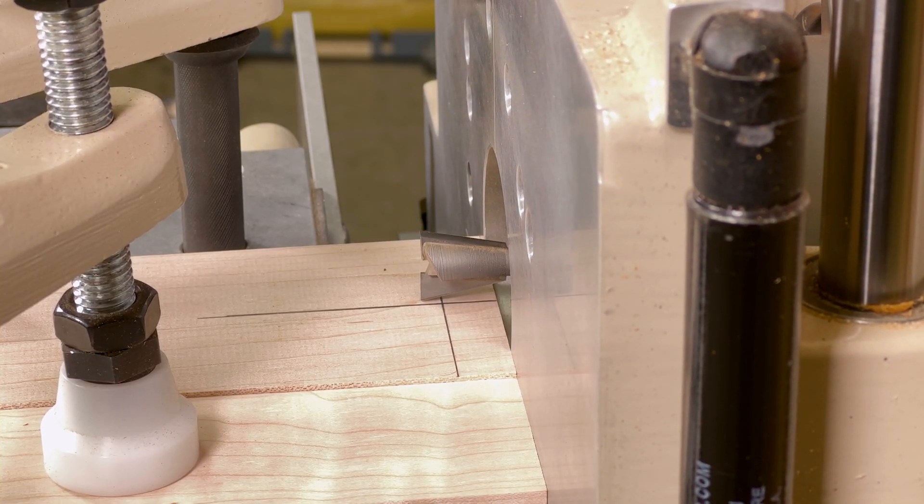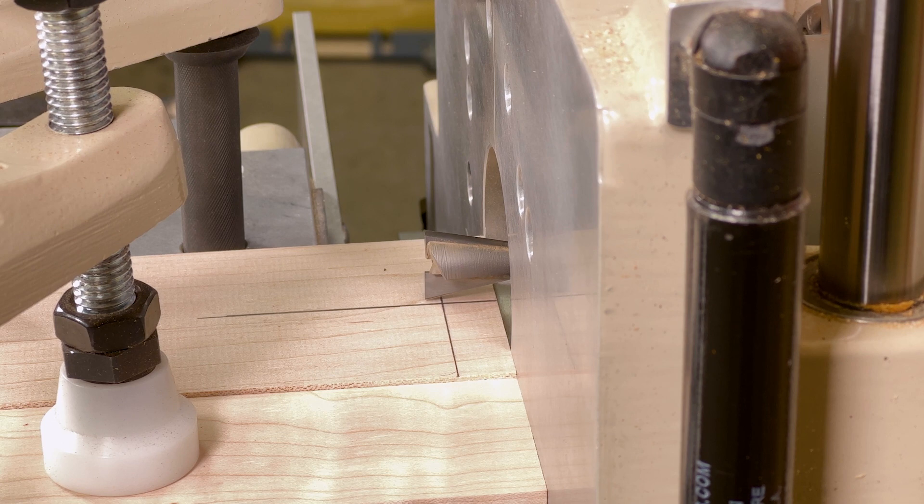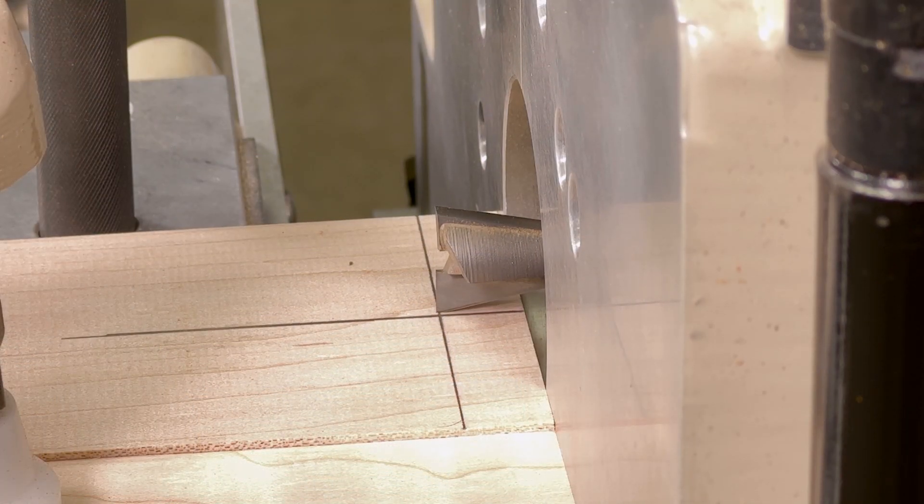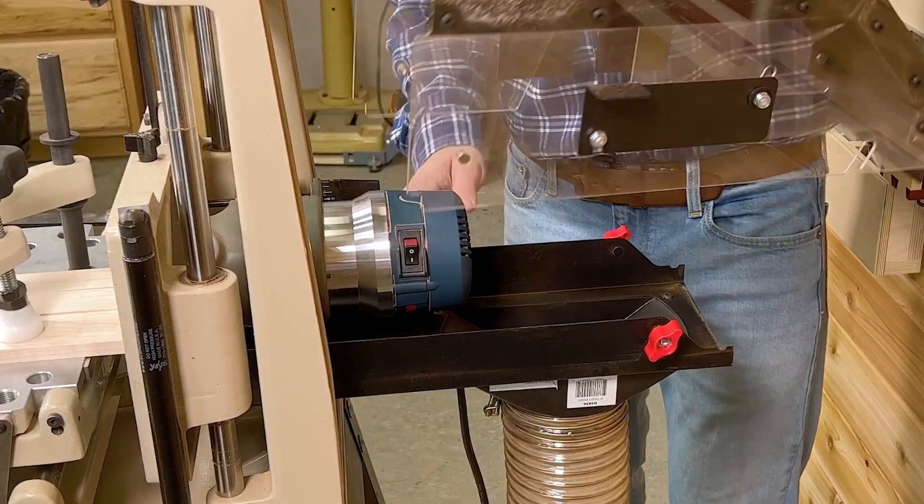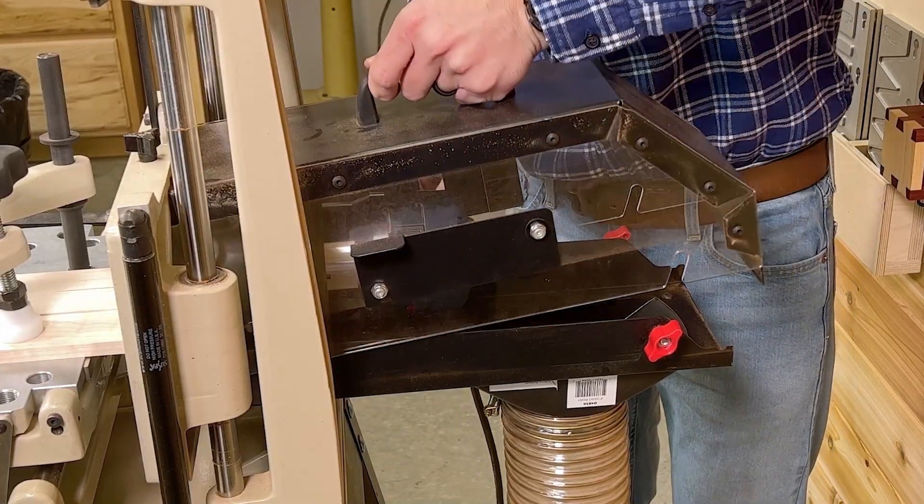Lastly, adjust the router's depth of cut until the end of the router bit aligns with your mark. Extend the bit just a hair past your mark. Then snap on your dust cabinet and you're ready to route.